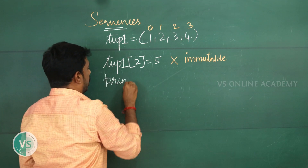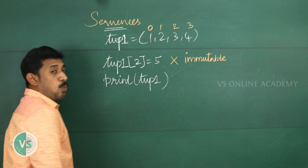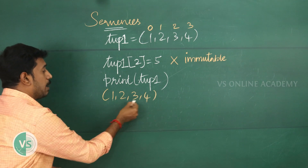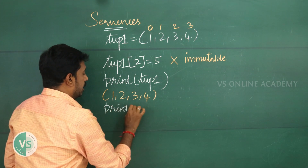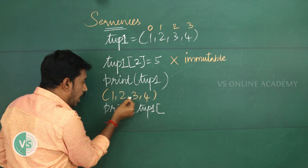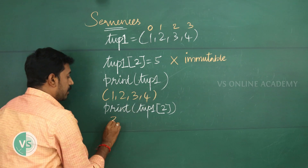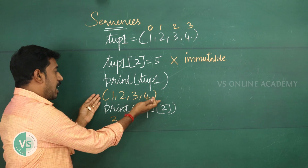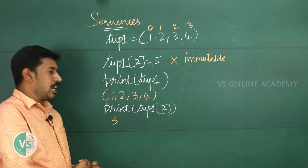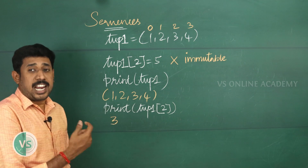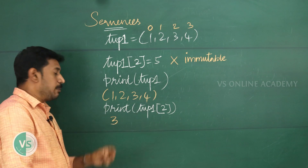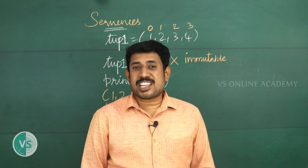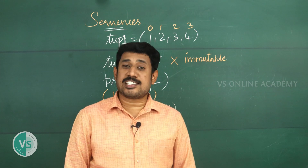However, we can access elements from a tuple based on index, just using the print function. For example, print(tup1) will print 1, 2, 3, 4 as the full tuple. If you want to access a particular element, say element 3, use print(tup1[2]) — index 2 gives output 3. If you print the entire tuple it prints with the structure; if you access a specific element it prints only that element. This applies to lists too. With this I conclude today's chapter on lists and tuples. We are going to see sets and dictionaries in the upcoming video — stay tuned and thank you for watching.